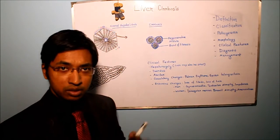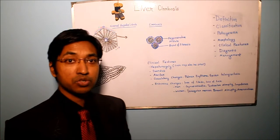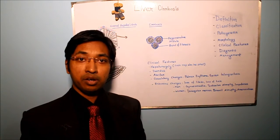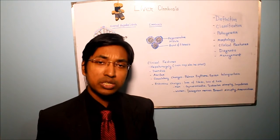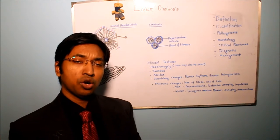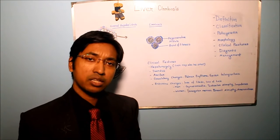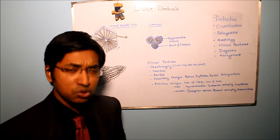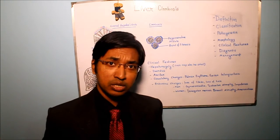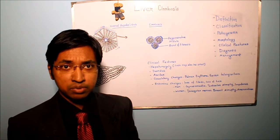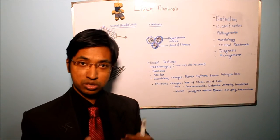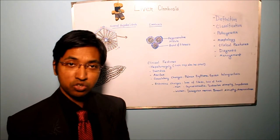Now, in liver cirrhosis we can have three types of nodules. According to morphology it can be micronodular, macronodular, and mixed type. Liver cirrhosis is micronodular when the nodules are less than three millimeters in diameter. Usually the fibrous septa surrounding these micronodules will be thin; however, if there is collapse in some areas of the liver adjacent to these septa, that may also widen the septa.